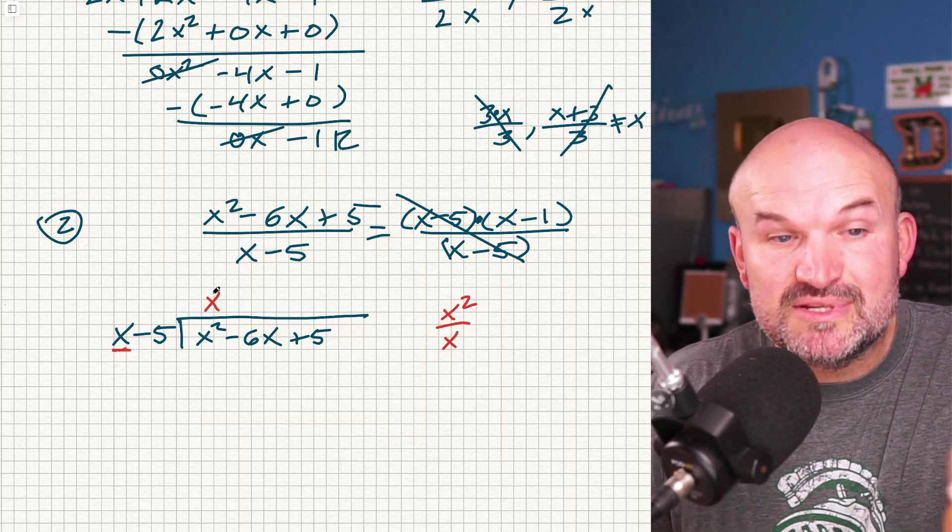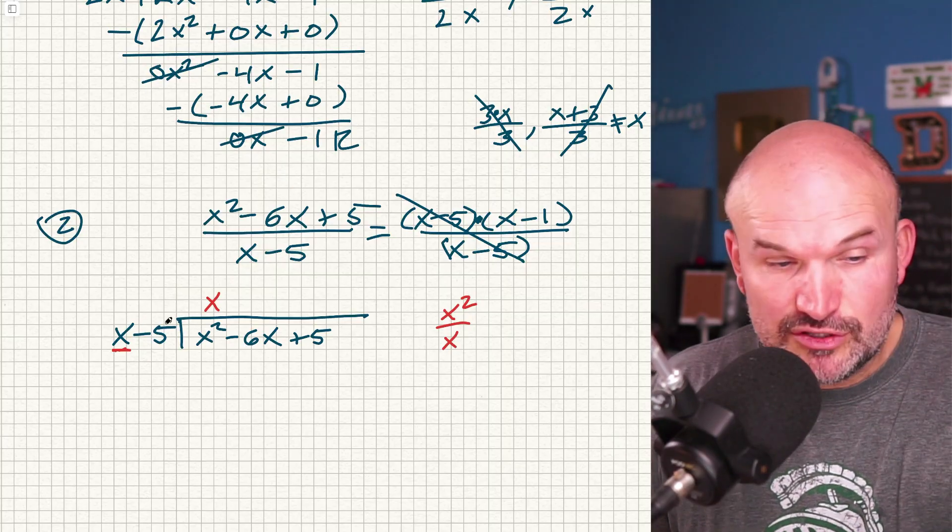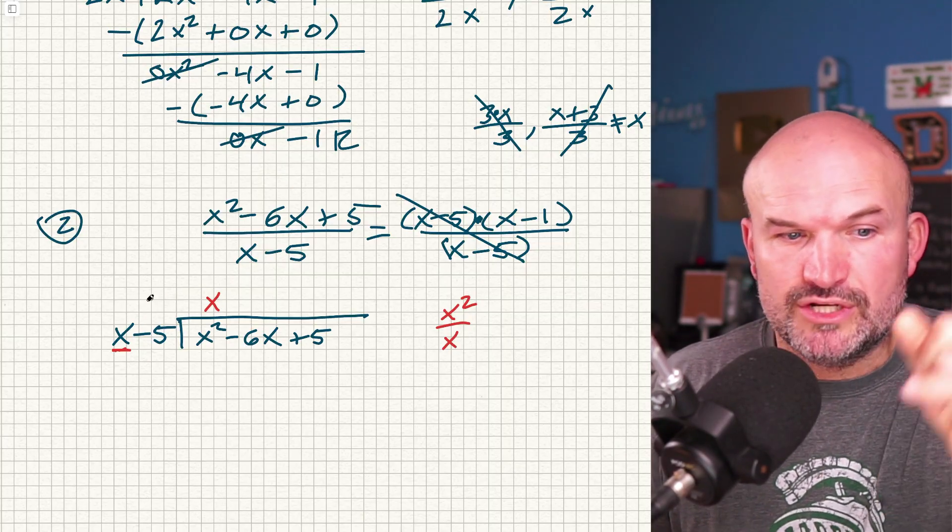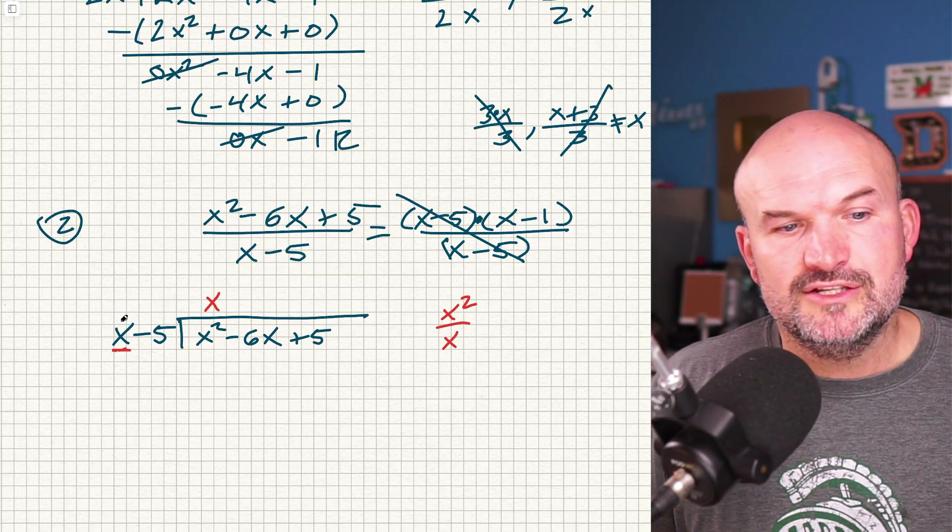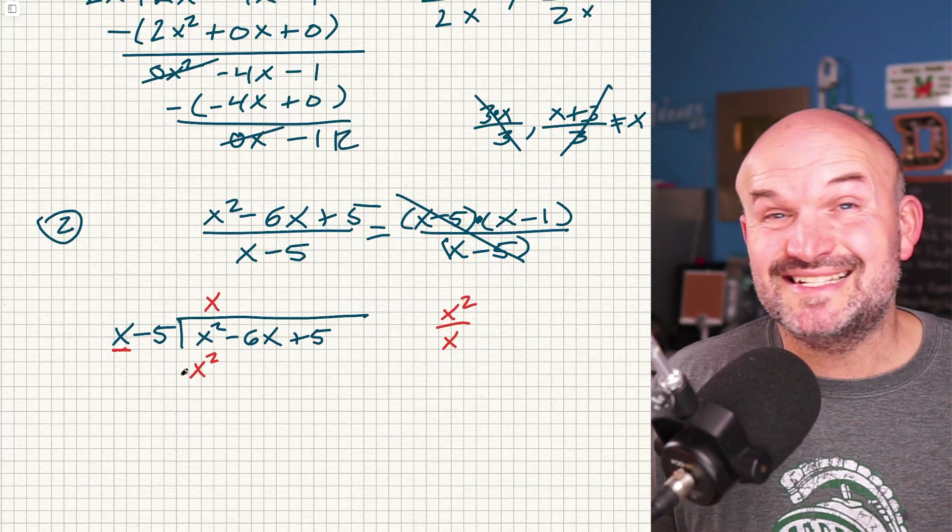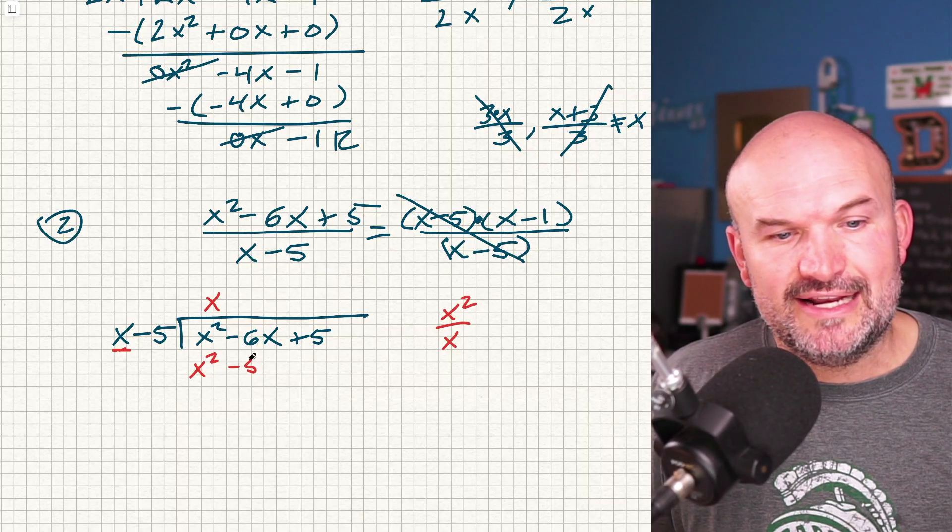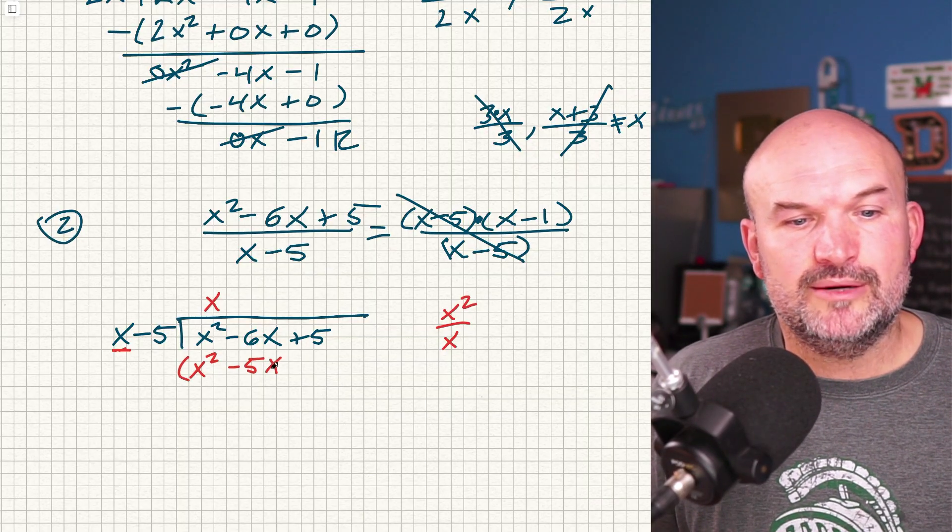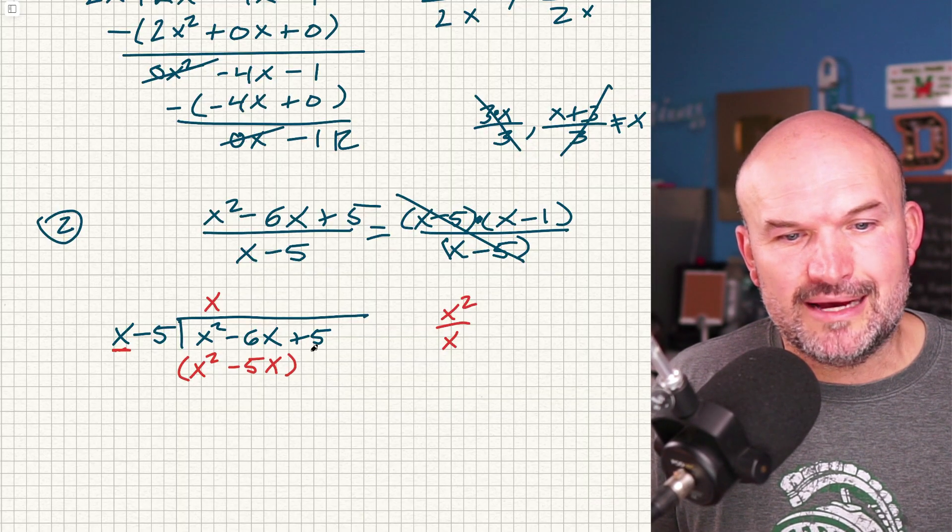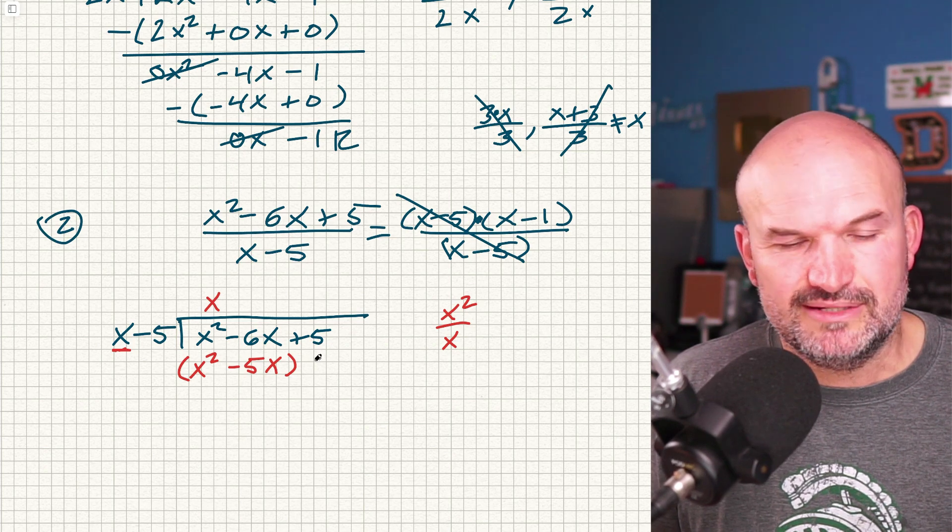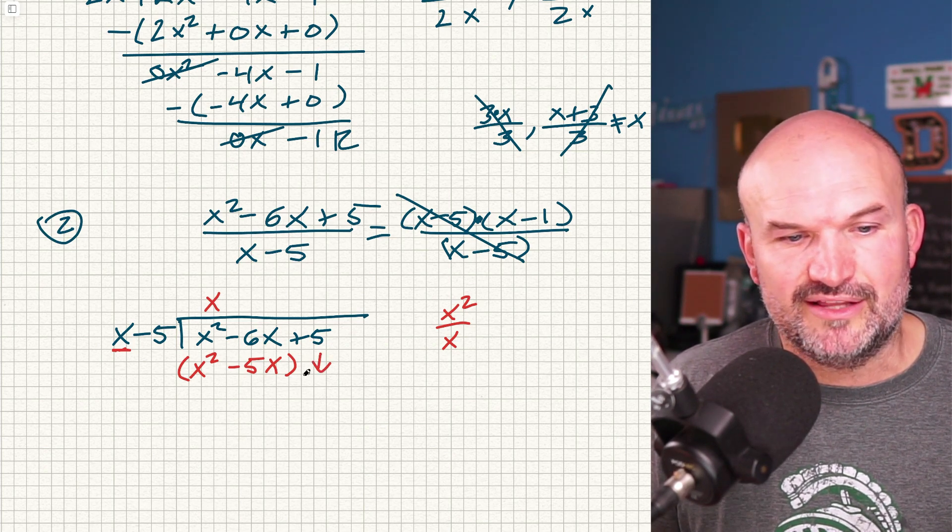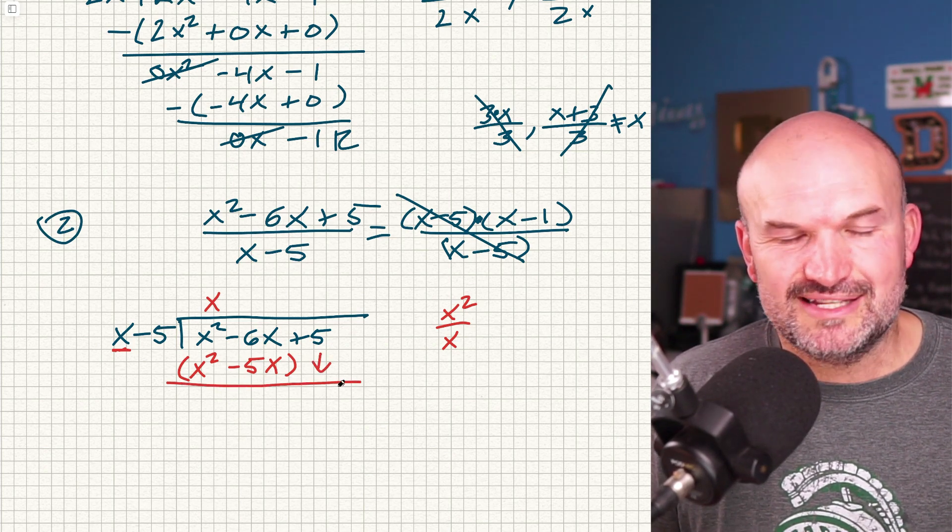Now I multiply the x times both terms, right? Since I have two terms here, I got to take my first term, my quotient, multiply it by both terms. So x times x is x squared. That's exactly the same. Just like in the previous example, that's what I want. And x times a negative five, which is going to be a negative 5x. Again, we're going to put parentheses around here. Now, in this case, I'm not going to put a plus zero, plus zero and subtract it. I'm just going to bring down the five. It just is a lot easier.